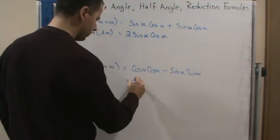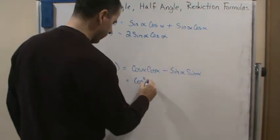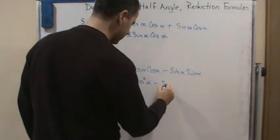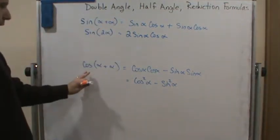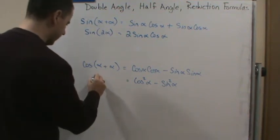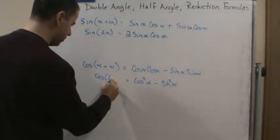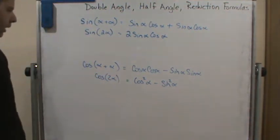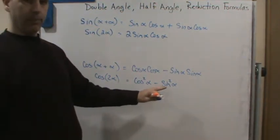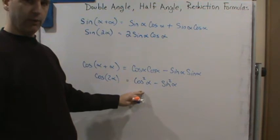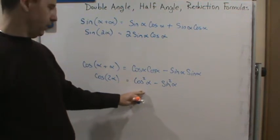And then what do we end up with? We end up with cosine squared alpha minus sine squared alpha. Now, there's two variations for the double angle, because then we get, again, cosine 2 alpha.